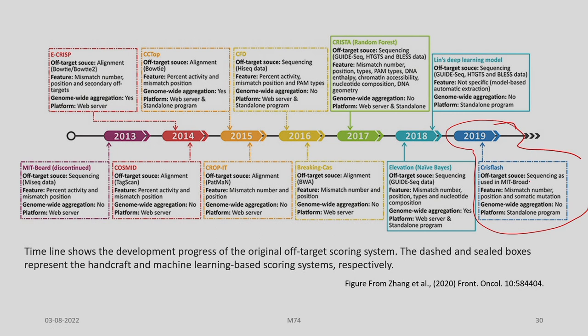Using the MIT board, features include mismatch number, position, and somatic mutations. In Lin's deep learning model, the sequencing using guide sequence, GTS, and BLAST data is used as features. In CRISPRflash, features such as mismatch number, position, types, PAM types, DNA enthalpy, chromatin accessibility, nucleotide composition, and DNA geometry are considered simultaneously.